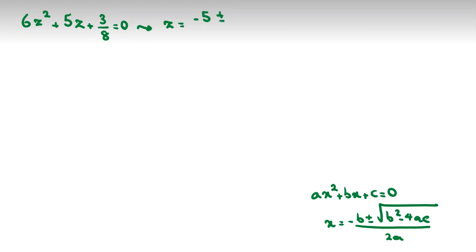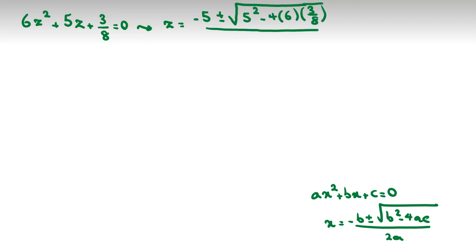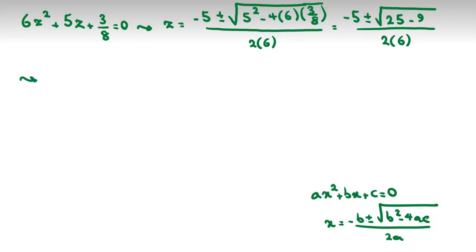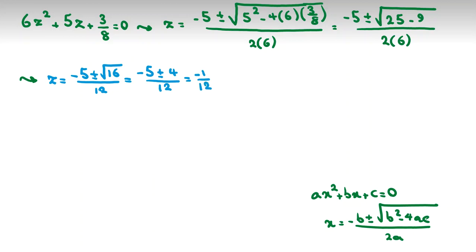Applying the formula: z equals negative 5 plus or minus square root of 5² minus 4·6·(3/8), all over 2·6. The discriminant is 25 minus 24·(3/8) equals 25 minus 9 equals 16. So z equals negative 5 plus or minus 4, all over 12. This gives z equals negative 1/12 or z equals negative 9/12 equals negative 3/4.